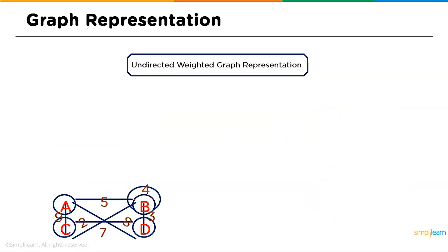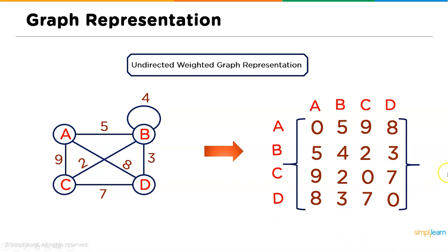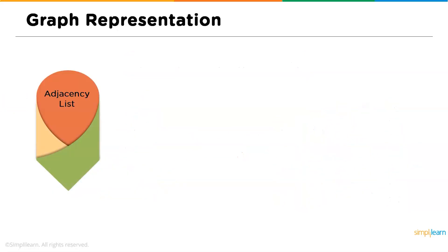Next, undirected weighted graph representation. Instead of zeros and ones, we represent the weight of the edge. We do not have a connection between A to A, so that is zero as usual, but we do have a connection from A to B, so we represent it with the actual weight of that edge. Remember, this is an undirected weighted graph — if it were directed weighted, we would also account for direction.